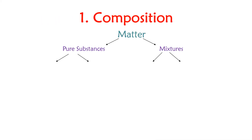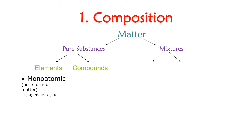Let's look at how we can classify matter based on its composition — this should be a quick review. Matter can be classified as pure substances or as mixtures. Pure substances can be further classified into elements and compounds. Elements are the basic, simplest forms of matter that can exist, and we see the monatomic elements on the periodic table — they represent one atom of that specific element, such as carbon, magnesium, sodium, or calcium.